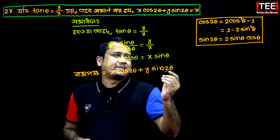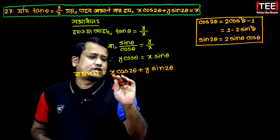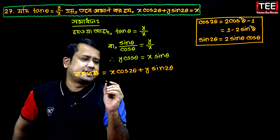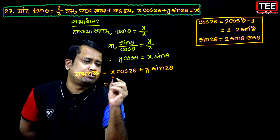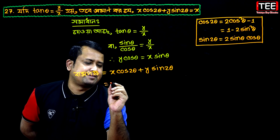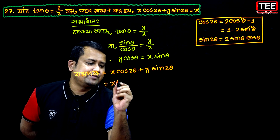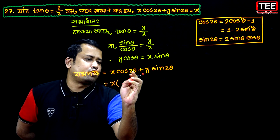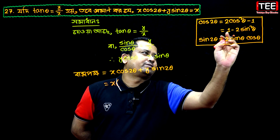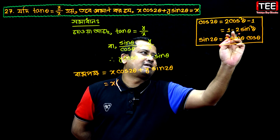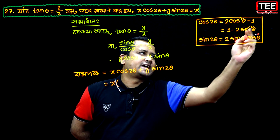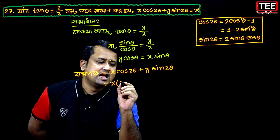Then, cos 2θ is 0. Here, x is x. Then cos 2θ is 0, giving us 1 minus 2sin²θ.